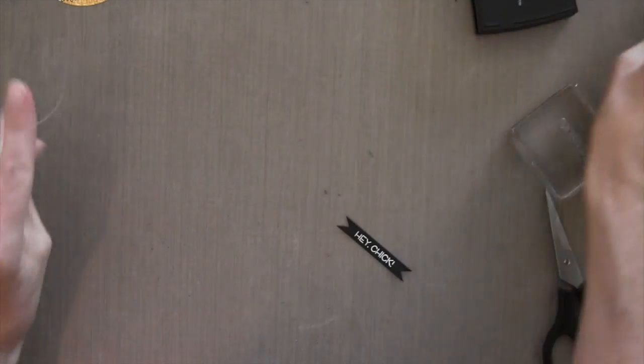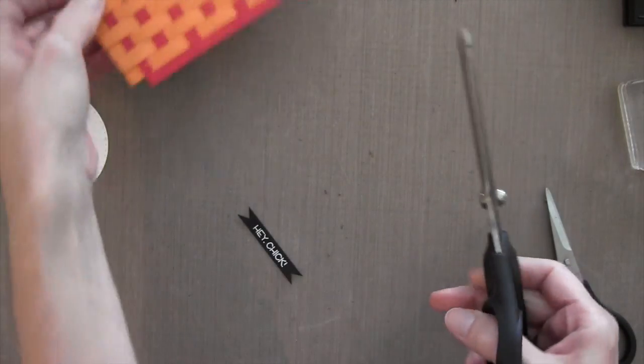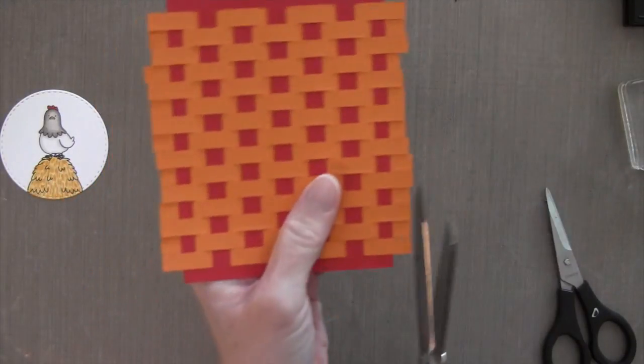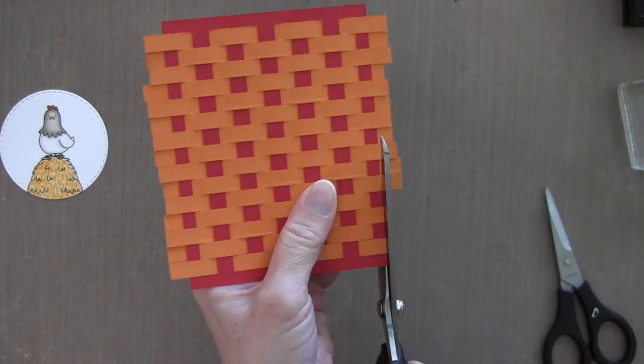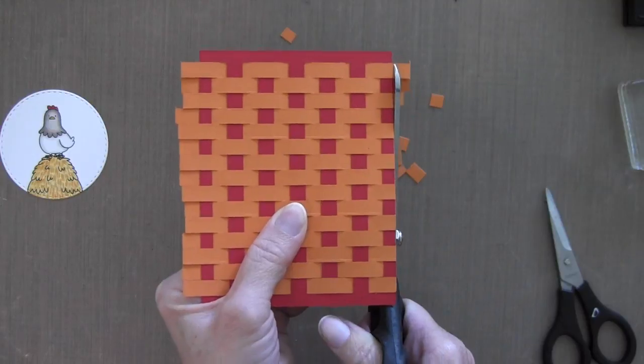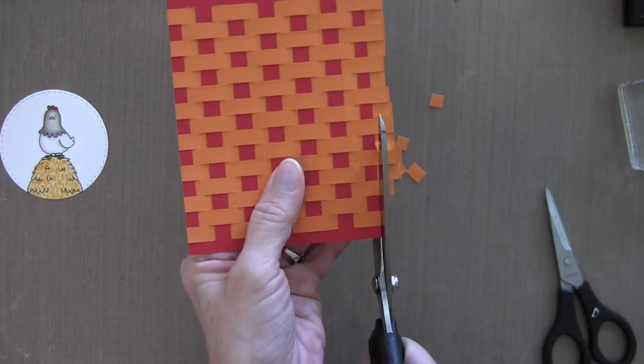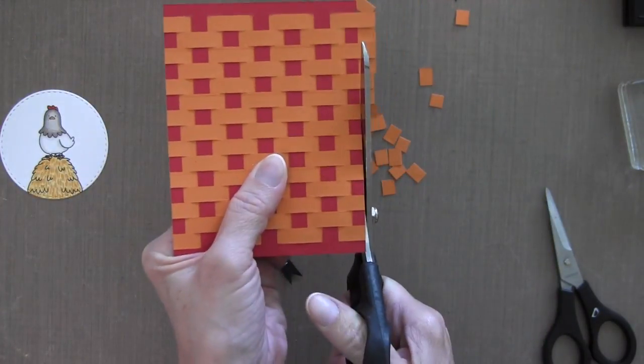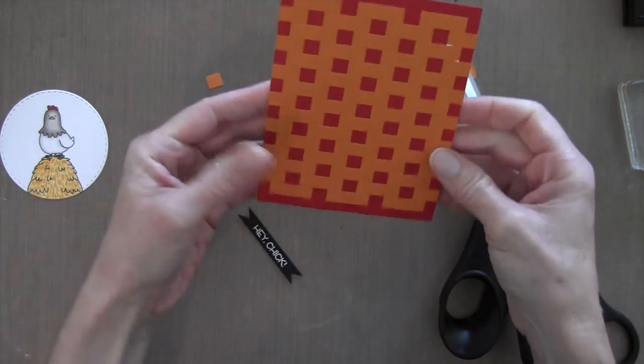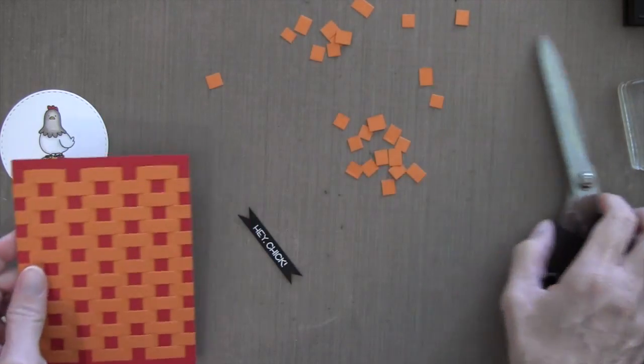And now I'm going to trim out my basket weave. I took a large scissor because I think it's easier to make these kind of cuts with a large scissor. And I'm using the red cardstock as a guide. And I'm just slowly cutting these pieces and they all popped off and the glue worked and everything stayed into place.